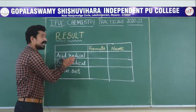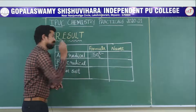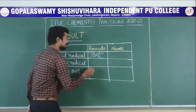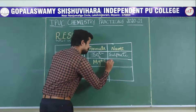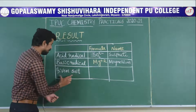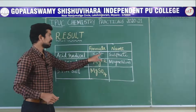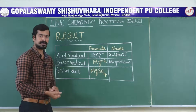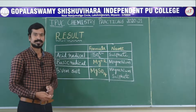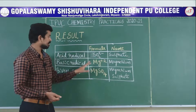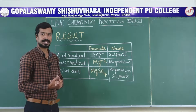In the tabular column, the acid radical is sulfate with formula SO₄²⁻. The basic radical is magnesium with formula Mg²⁺. The given salt is therefore magnesium sulfate — MgSO₄. The charges +2 and −2 cancel to give a neutral compound. The name is magnesium sulfate, MgSO₄. This is how we determine the acid radical and basic radical in a given salt.